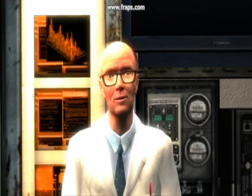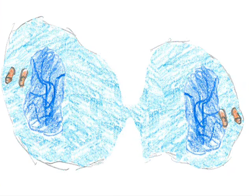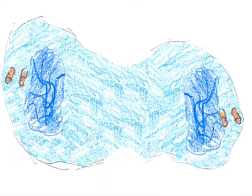During the last stage of the cell cycle, cytokinesis, the cell splits in half to make two daughter cells.